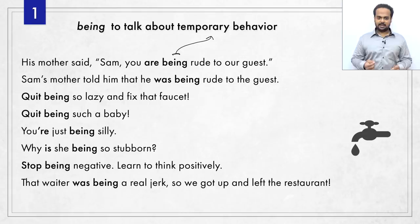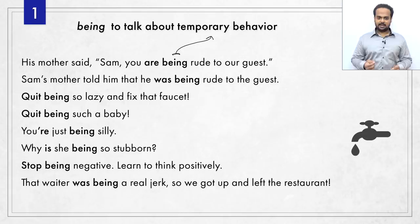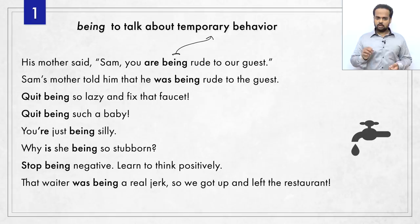Here are some more common sentences: quit being such a baby — if a friend of yours is always whining and complaining. You're just being silly. Why is she being so stubborn? Stubborn means she won't change her mind, she wants things her way. Stop being negative — learn to think positively. That waiter was being a real jerk, so we got up and left the restaurant. Jerk is a slang term for someone who is rude. In all these sentences, being talks about a person's temporary behavior. That's the first use.